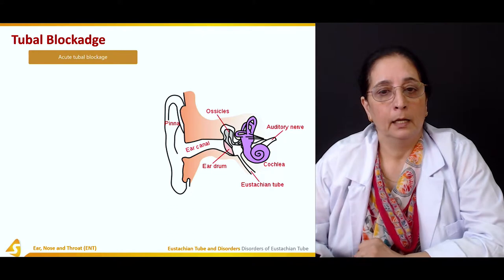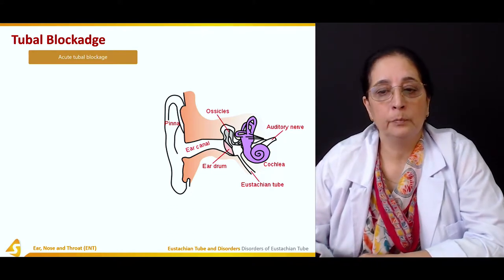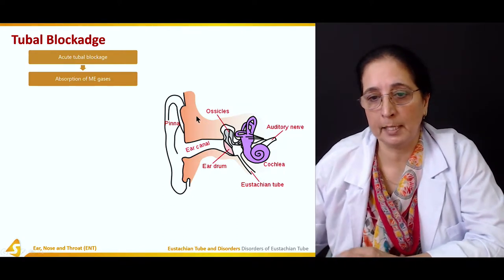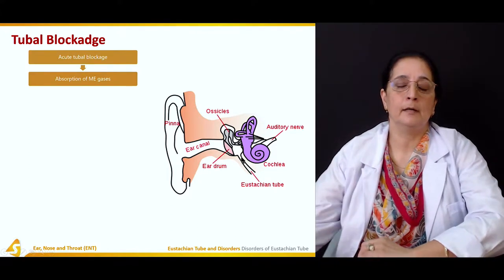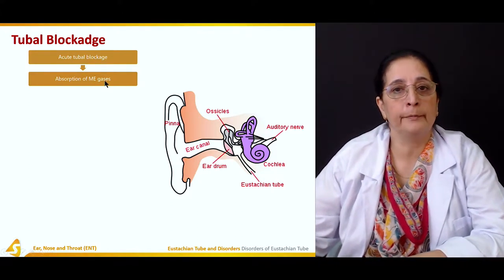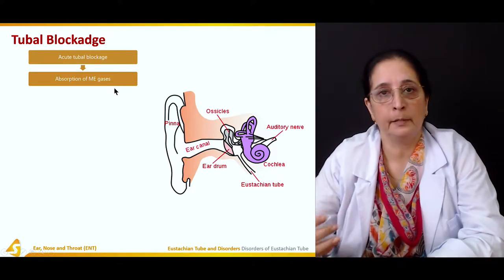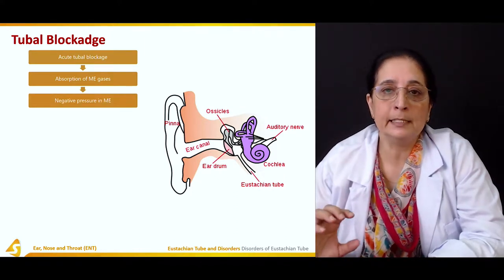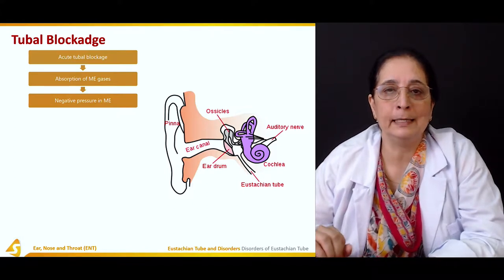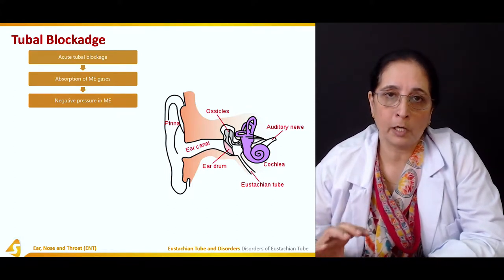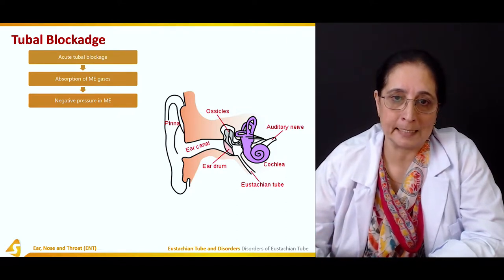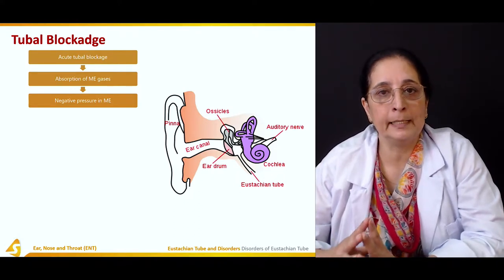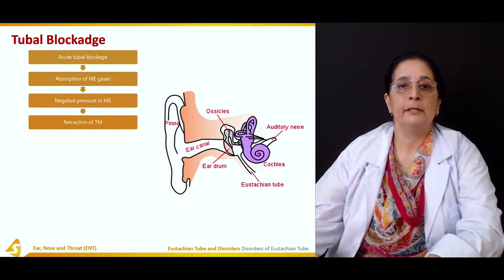Tubal blockage — in this we have the acute tubal blockage. If there is acute tubal block, if the Eustachian tube is blocked, then usually there is absorption of middle ear gases. When the tube is blocked, absorption of middle ear gases takes place and this can build negative pressure in the middle ear.